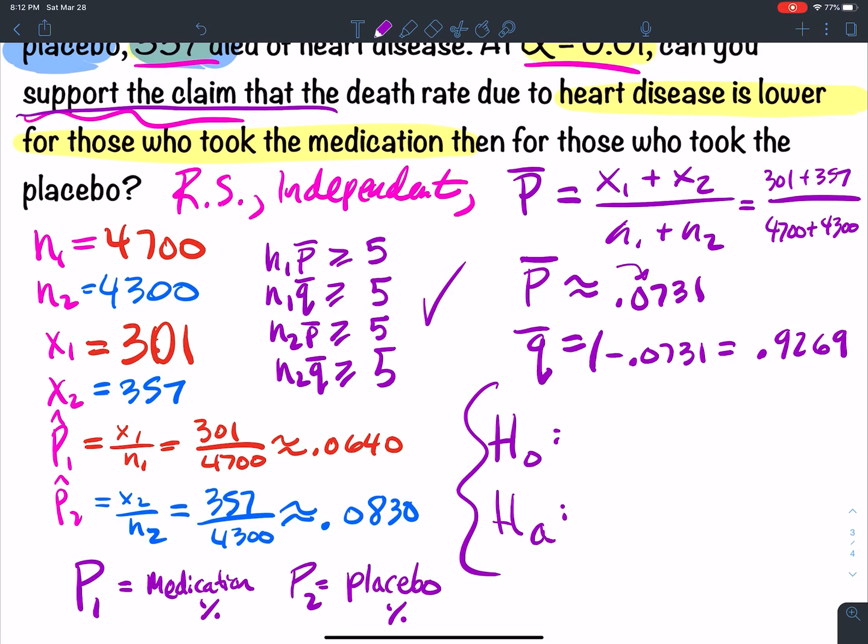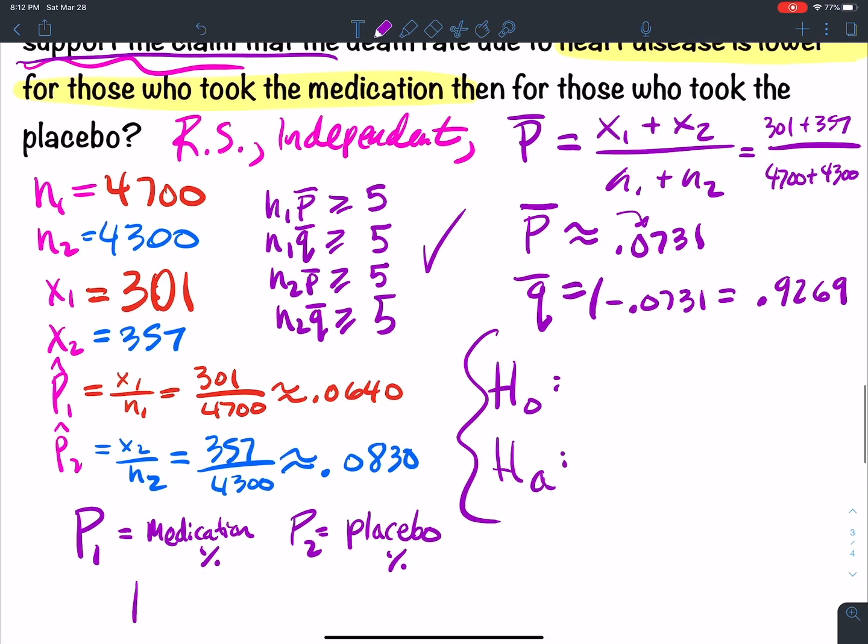So what do we want? We want the medication percentage to be less than the death rate of the placebo. If the placebo and the medication had about the same death rate, then what's the point in taking the medication if it had the same effects as taking no medication at all?